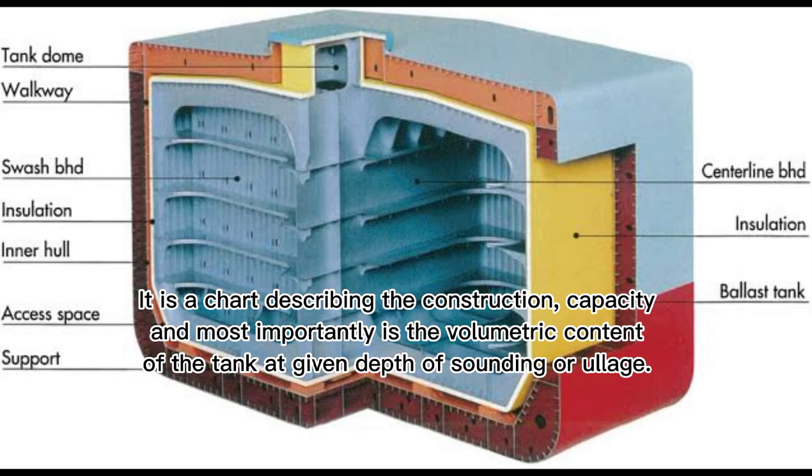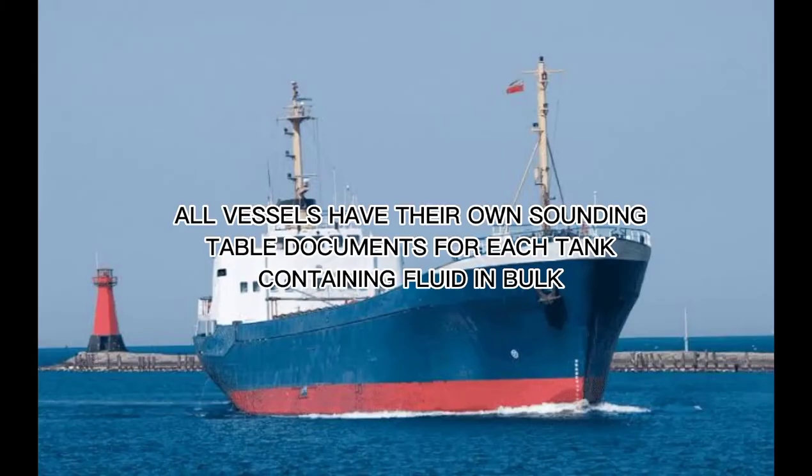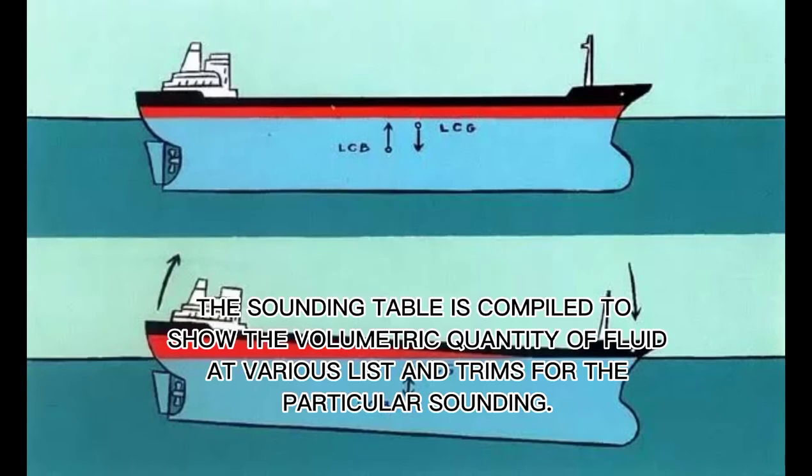Sounding table. It is a chart describing the construction, capacity, and most importantly, is the volumetric content of the tank at given depth of sounding or ullage. All vessels have their own sounding table documents for each tank containing fluid in bulk. The sounding table is compiled to show the volumetric quantity of fluid at various lists and trims for the particular sounding.